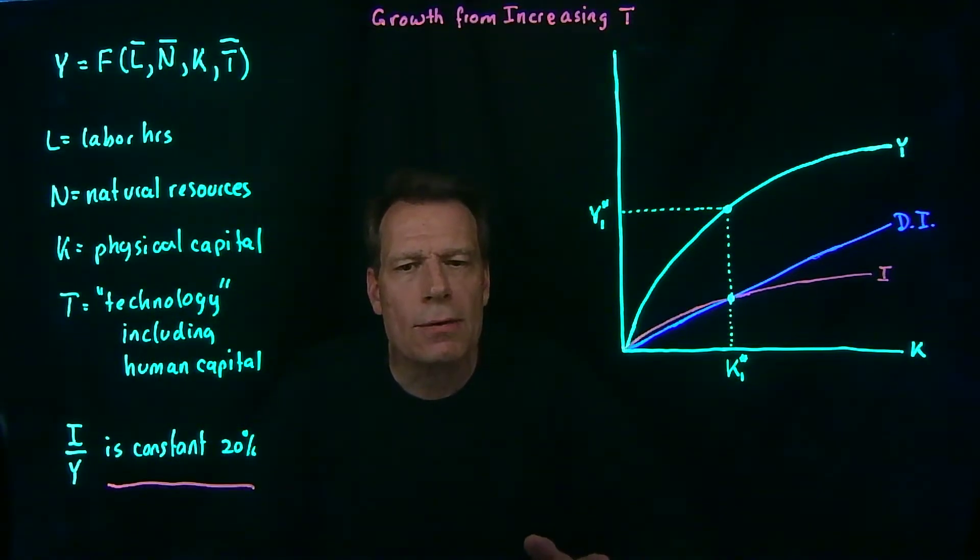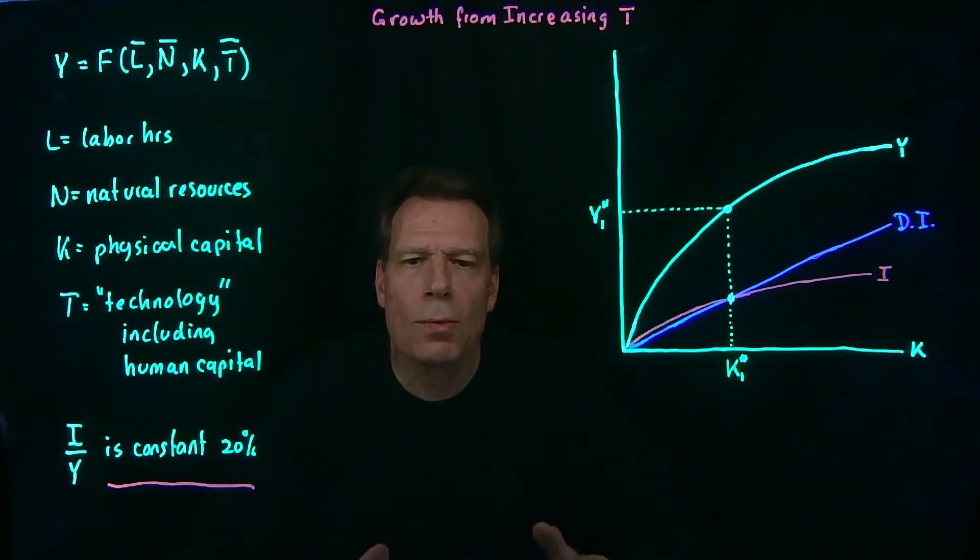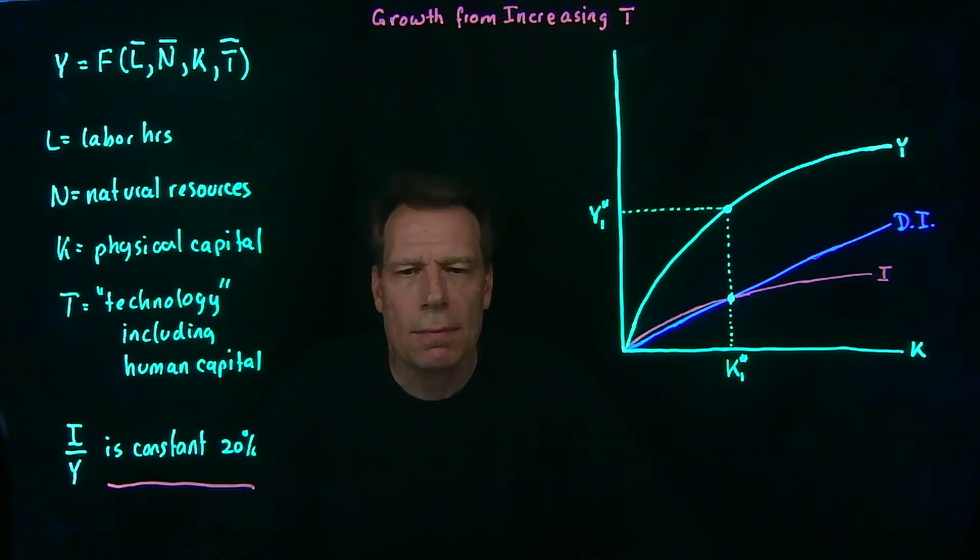So wherever the increase in technology comes from, let's think about what it would do in the context of our model. Which of the curves or lines in our model would change? Well, the depreciation investment line certainly wouldn't change. For any level of capital, it'll still take the same amount of investment to just keep that capital at a constant level.